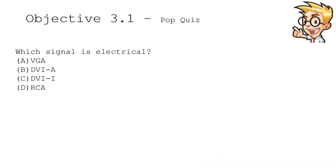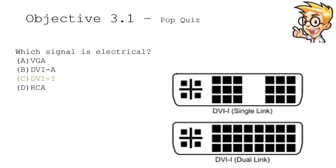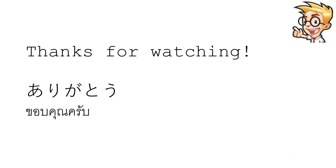We're at the end of Objective 3.1. Quiz question: which signal is electrical? A, VGA; B, DVI-A; C, DVI-I; or D, RCA. The answer is DVI — DVI is electrical, but DVI-A is analog. Thank you for watching.